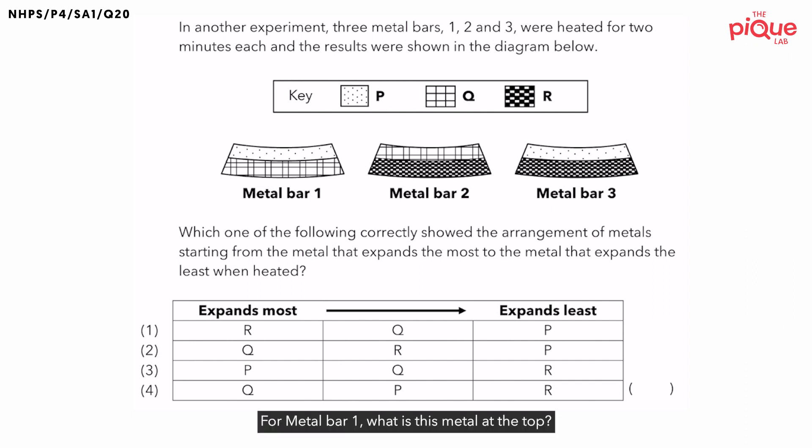For metal bar one, what is this metal at the top? The metal at the top is metal P, and the metal at the bottom is metal Q. For metal bar two, the metal at the top is metal Q, and the metal at the bottom is metal R.